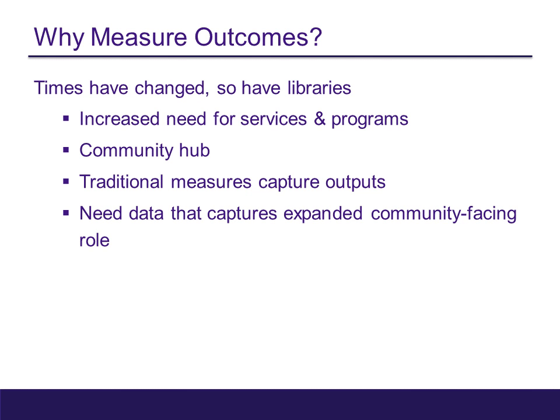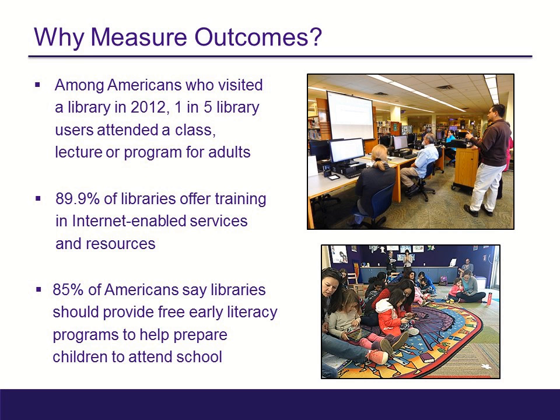So first, let's address the question: why measure outcomes? We know times have changed and, as a result, so have libraries. There has been an increased need for services and programs. The library's role has transformed into a community hub addressing a variety of community needs. But traditional measures only capture outputs — they don't capture the library's newly expanded community role. We know libraries offer a variety of important services, from digital to early literacy programs and so much more. But numbers alone are no longer enough. How do we capture the library's impact on the community?